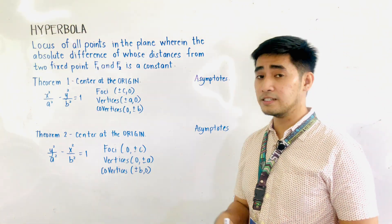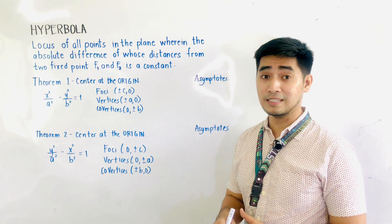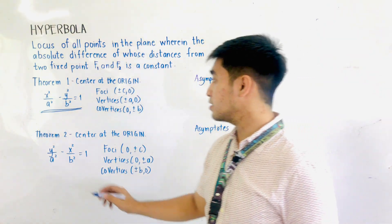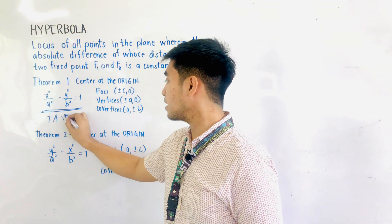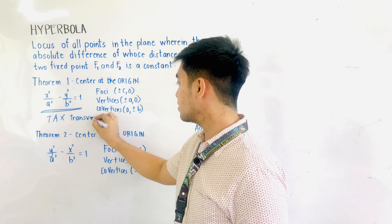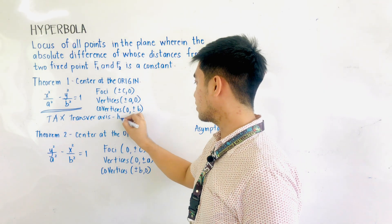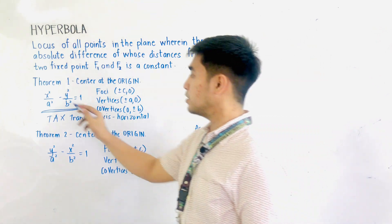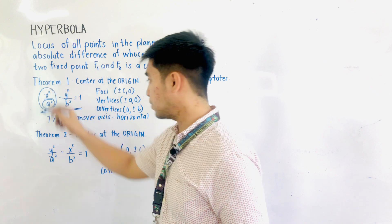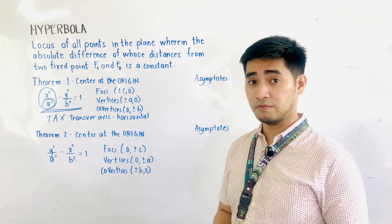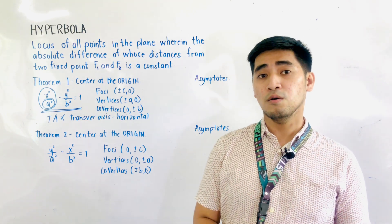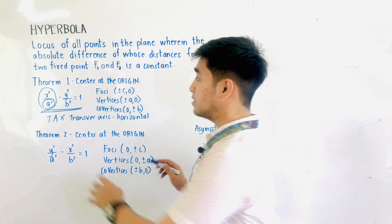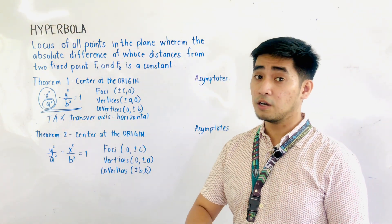Theorem number 1 states that x² / a² minus y² / b² is equal to 1. Remember, if we are given this equation, we will be calling this as transverse axis x — wherein the transverse axis is horizontal. How did we know that the transverse axis is horizontal? By just merely looking at the denominator or the sign of the first term. Since x² / a² is positive, it is the transverse axis. Whichever of the two variables is positive, that becomes our transverse axis.